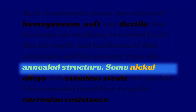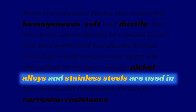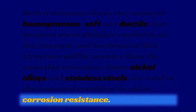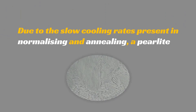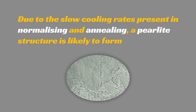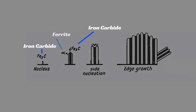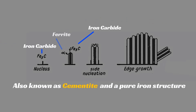Some nickel alloys and stainless steels are used in the annealed condition to aid in corrosion resistance. Due to the slow cooling rates present in normalizing and annealing, a pearlite structure is likely to form. Pearlite consists of alternate laths of iron carbide, also known as cementite, and a pure iron structure called ferrite.